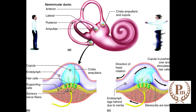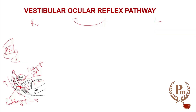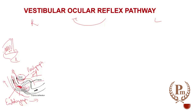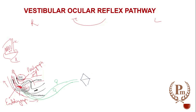In the ampulla of the semicircular canal there are sensitive hair cells, and above these hair cells there is a jelly-like substance called the cupula. When the head moves towards the right side, because of inertia the endolymph moves in the opposite direction — to the left side. This causes movement of the stereocilia towards the kinocilium. The impulses travel through the vestibular afferent fibers, through the ganglion, and go to the vestibular nucleus.